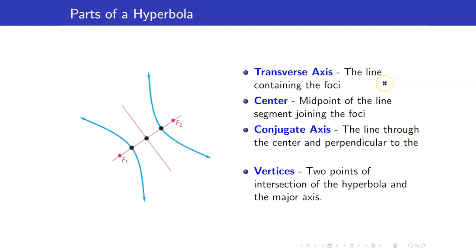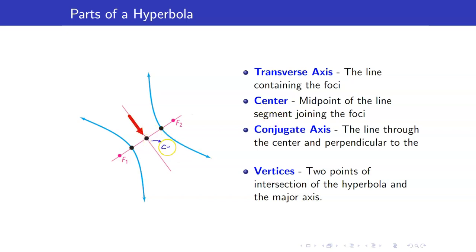Here are the parts of a hyperbola. The transverse axis is the line containing the foci — the counterpart of this for an ellipse would be the major axis. Similarly, the center is the midpoint of the line segment joining the foci. The conjugate axis is the line through the center and perpendicular to the transverse axis.